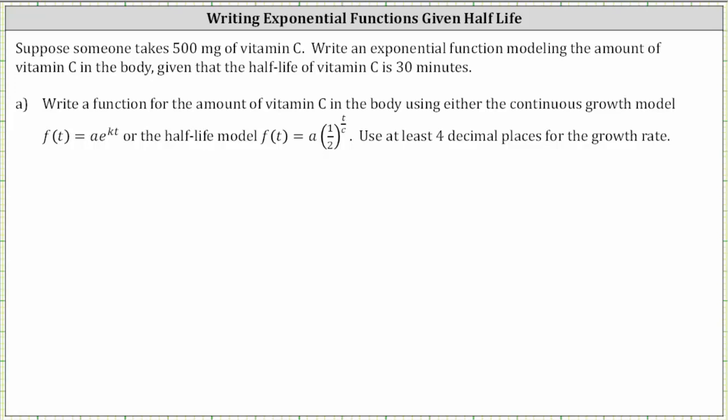Suppose someone takes 500 milligrams of vitamin C. We have an exponential function modeling the amount of vitamin C in the body, given that the half-life of vitamin C is 30 minutes. For part A, we need to write a function for the amount of vitamin C in the body using either the continuous growth model or the half-life model. In this lesson, we will be using the continuous growth model.